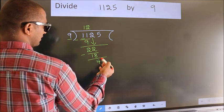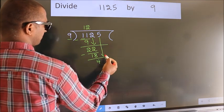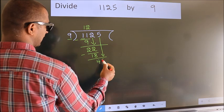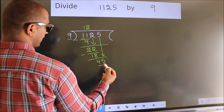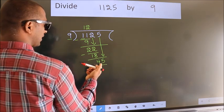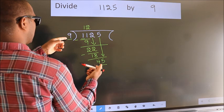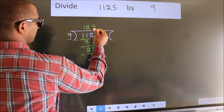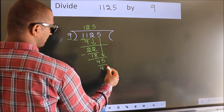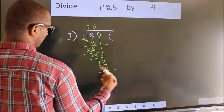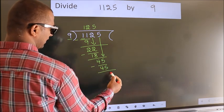After this, bring down the beside number. So, 5 down. So, 45. When do we get 45? In 9 table, 9 fives 45. Now, we subtract. We get 0.